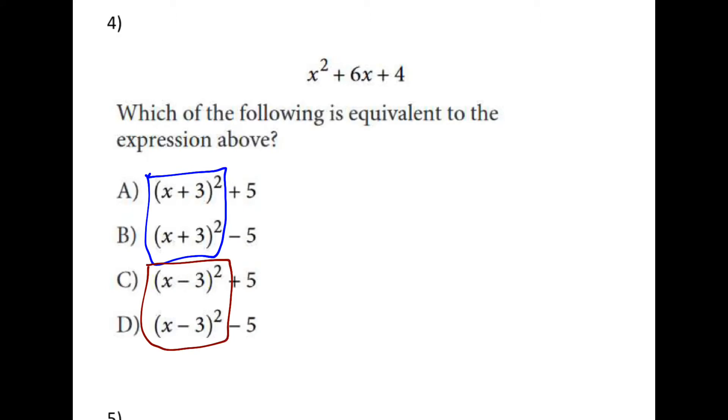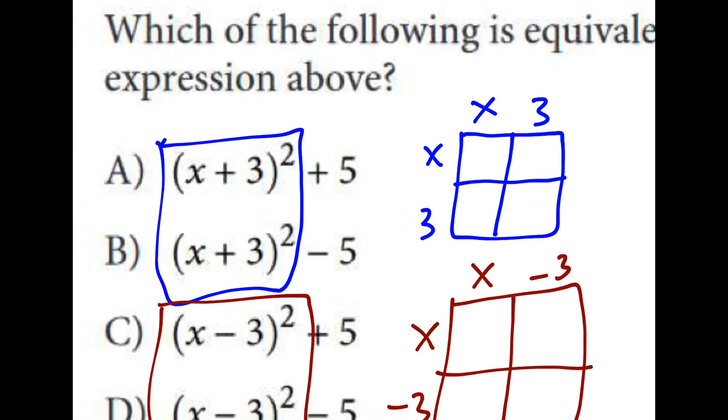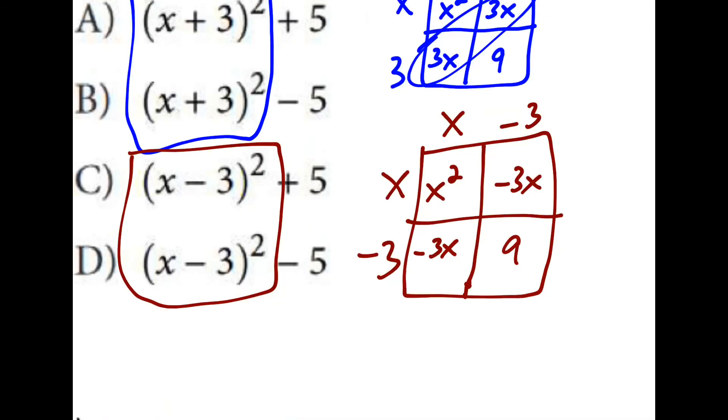If I can figure out what x plus 3 squared and x minus 3 squared are, that will really help me narrow things down. Now personally, I like to use the box method for these. This would give me x squared plus 6x plus 9 when I combine these two boxes. And down here in red, I would get minus 6x plus 9.